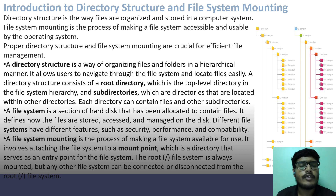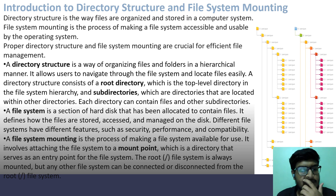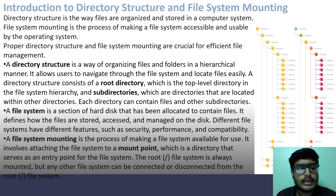A Directory Structure is the way of organising files and folders in a hierarchical manner. It allows users to navigate through the file system and locate files easily. A Directory Structure consists of a root directory, which is the top-level directory in the file system, and hierarchical subdirectories, which are directories located within other directories. Each directory can contain files and other subdirectories. A file system is a section of disk that has been allocated to contain files.